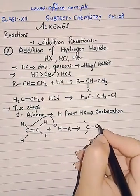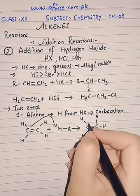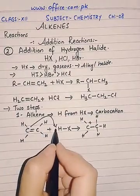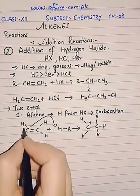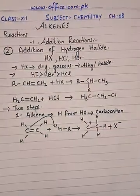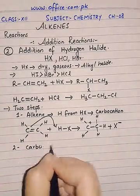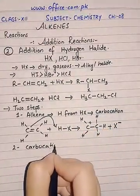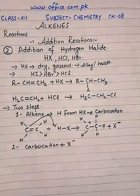In ethene, one carbon attacks the hydrogen of the hydrogen halide. As a result, the hydrogen becomes attached to one carbon while the other carbon is left with a positive charge, and X is released as a negative ion or anion. In the second step, since they are charged species, opposite charges attract each other — the carbocation will combine with the halogen anion.